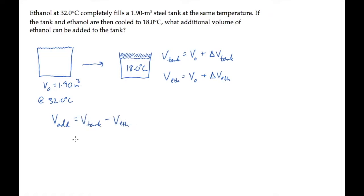From the equations above, we can replace the change in volume due to cooling with beta, the volume expansion coefficient, times the initial volume times delta T. We do this for the tank and for the ethanol, and simplify the result by canceling these initial volumes and factoring out the volume expansion coefficients.